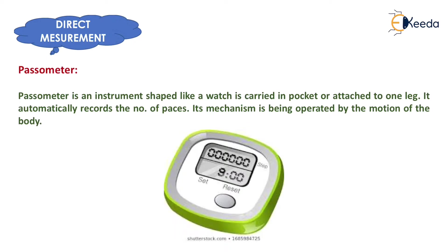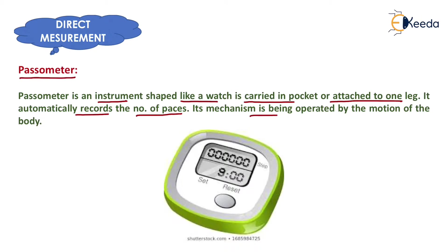Now what do you mean by passometer? A passometer is an instrument shaped like a watch, carried in the pocket or attached to one leg. It automatically records the number of paces — its mechanism is operated by the motion of the body.